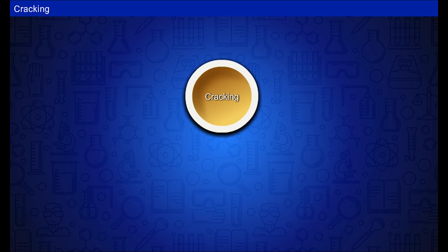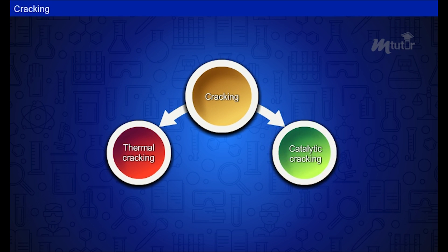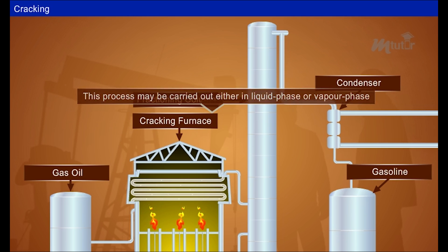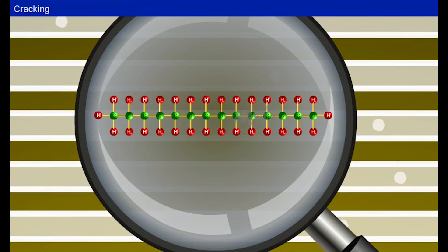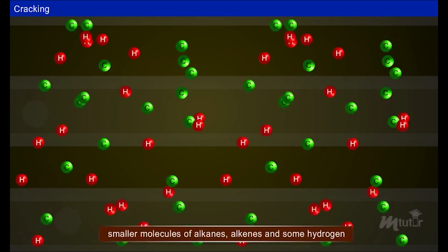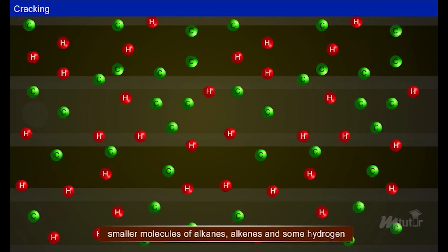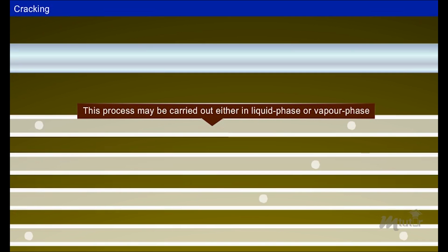There are two methods of cracking in use: thermal cracking and catalytic cracking. Thermal cracking is cracking that is carried out by the application of heat and pressure. Here the bigger hydrocarbon molecules break down to give smaller molecules of alkanes, alkenes, and some hydrogen. This process may be carried out either in liquid phase or vapor phase.